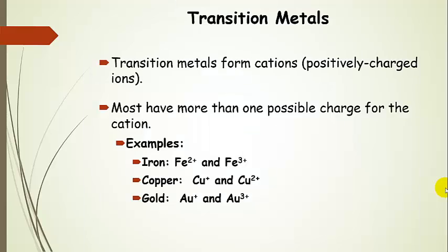So let's just summarize that. Transition metals form cations. They lose electrons, form positively charged ions. Basically, metals form cations. Most have more than one possible charge. Here's a few examples like I already mentioned.